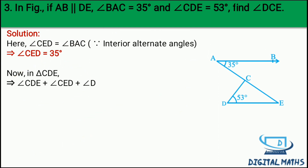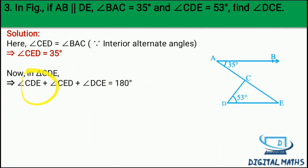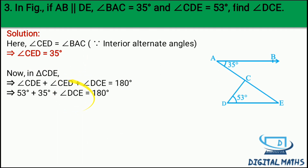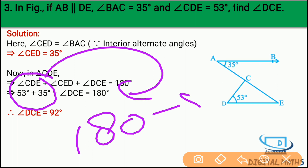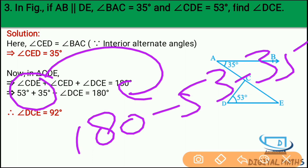Ab simple - direct triangle lo. In triangle CDE: angle CDE + angle CED + angle DCE = 180 degree. CDE ki value 53 degree di hui hai, CED = 35 degree. So 53 + 35 + angle DCE = 180 degree. Therefore angle DCE = 180 minus 53 minus 35 = 90 degree.